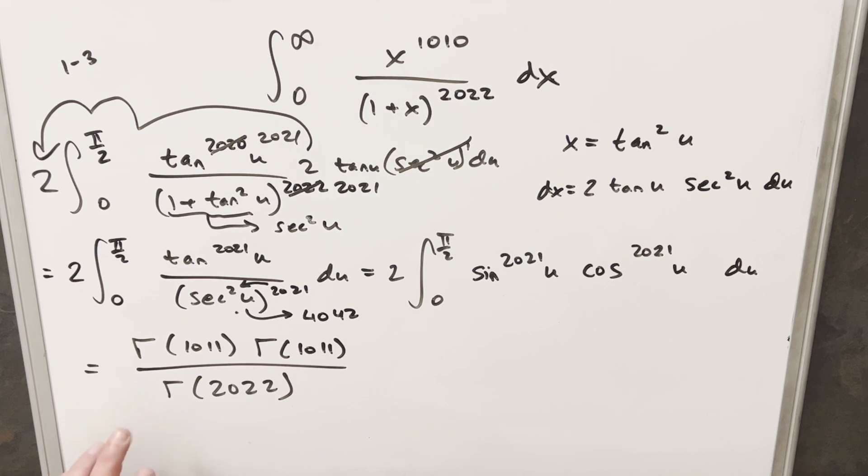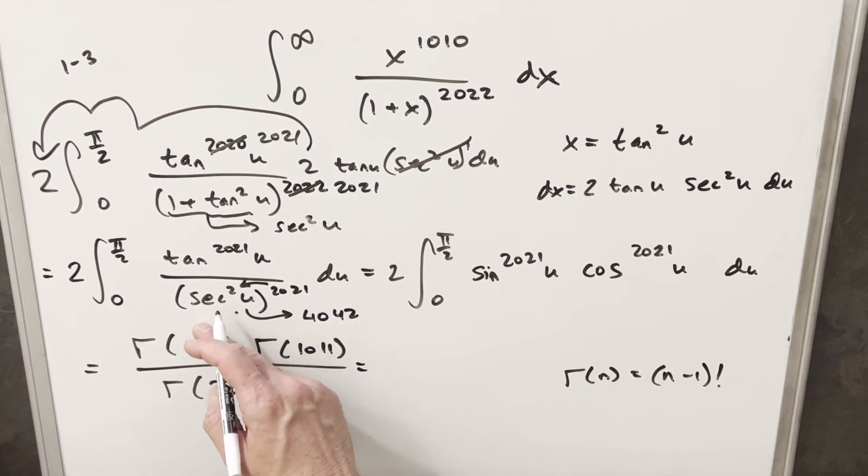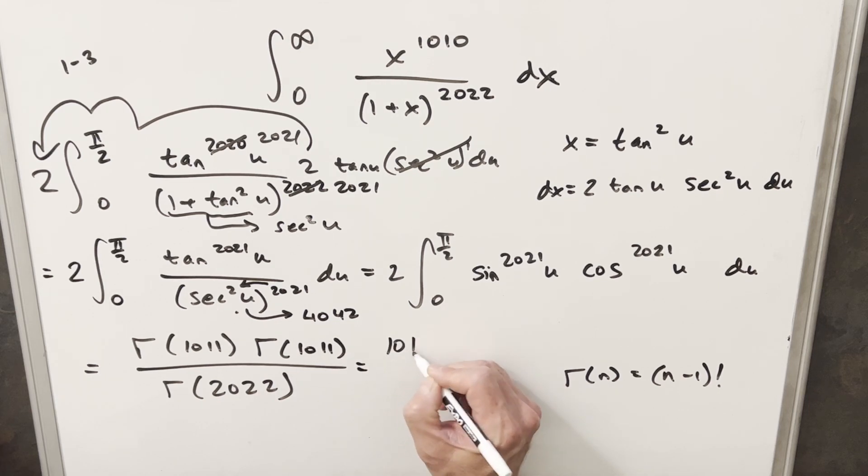Okay, so now that we have this in the form of the gamma function, we just want to try to get a little more simplification. And we've got a nice formula we can use for gamma to calculate this in terms of a factorial. So we can write, if we have the gamma function of n, we can calculate this as n minus one factorial. So for gamma of 1011, we can write this as 1010 factorial. Same thing for this one, 1010 factorial.